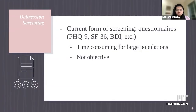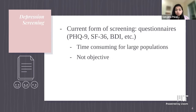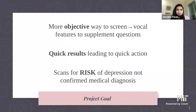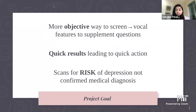The current form of screening for depression uses questionnaires filled out by patients. The problem is they're time-consuming for large populations, and they are not objective because they are filled out by the patients themselves. Our project goal is to figure out a more objective way to screen depression by using vocal features to supplement these questionnaires, giving quick results that lead to quick action.